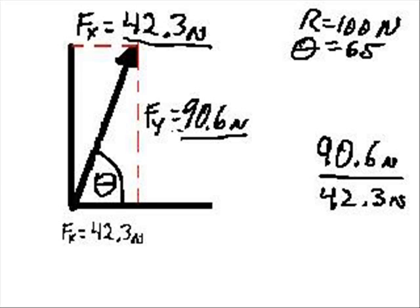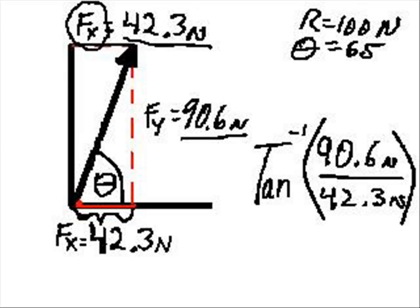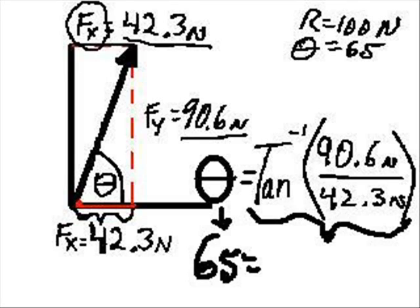Now if we take the tangent inverse of this thing, tangent inverse, it'll give us the angle that corresponds to this ratio, 90.6 over 42.3. That will be theta. And theta we have down as 65. Let's see if this works. Let's see if the tangent inverse of 90.6 over 42.3 newtons gives us 65. If it does, we are good to go.